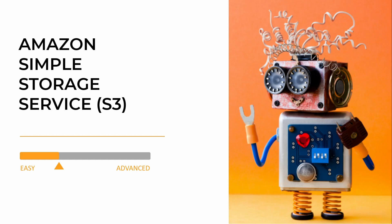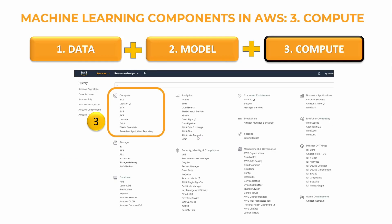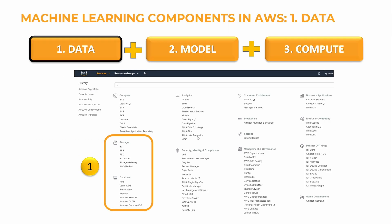Hello everyone, and welcome to this lesson. In this lesson, let's go ahead and learn about Amazon S3, or Simple Storage Service. If you recall, in the previous lesson, we learned about the various components to build any AI or ML model — our data, a model, and compute — and we found that AWS offers all these different services for us. When it comes to data and storage, S3 is one of those.